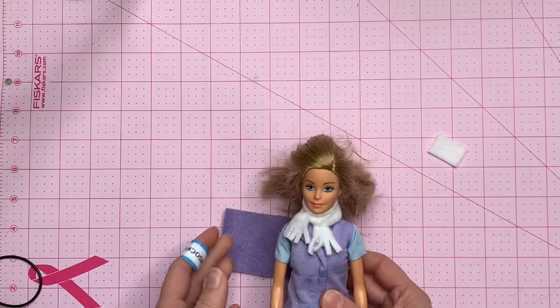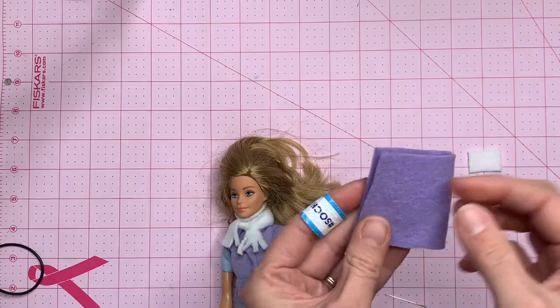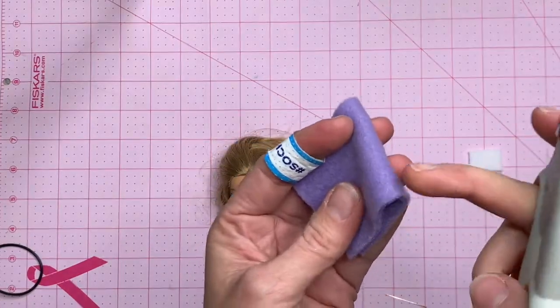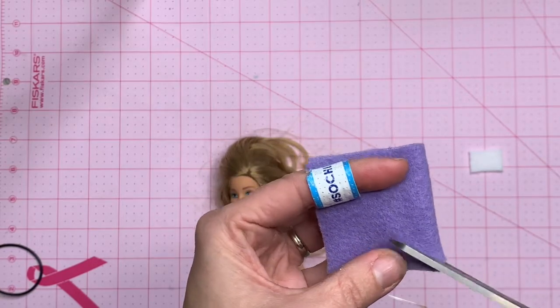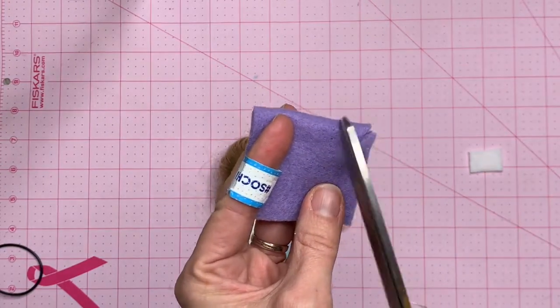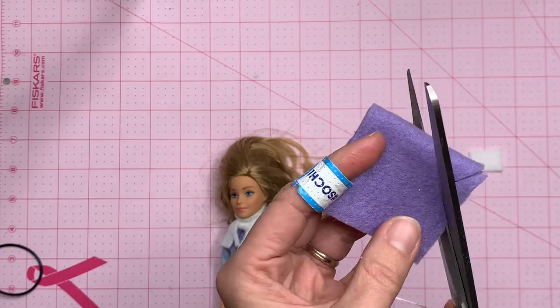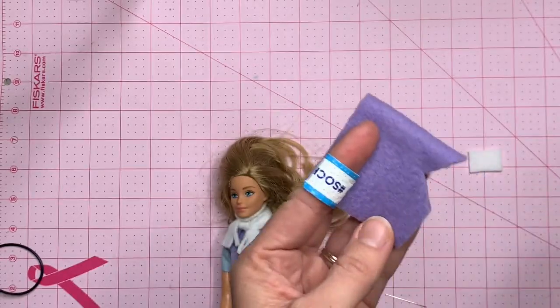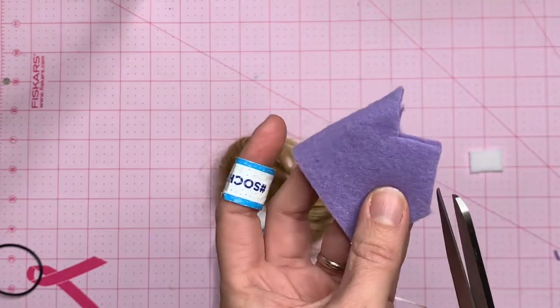Okay so the scarf is done, now let's do the hat. To make the hat we're going to take the two by four piece, fold it in half, and then we're going to cut it. So over here where it's folded we're going to cut in notches like this.